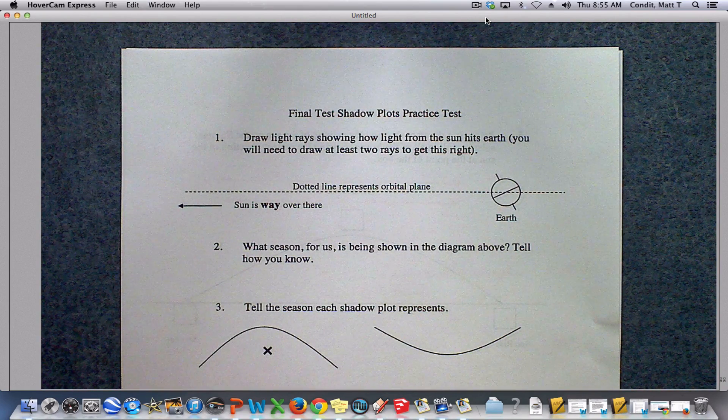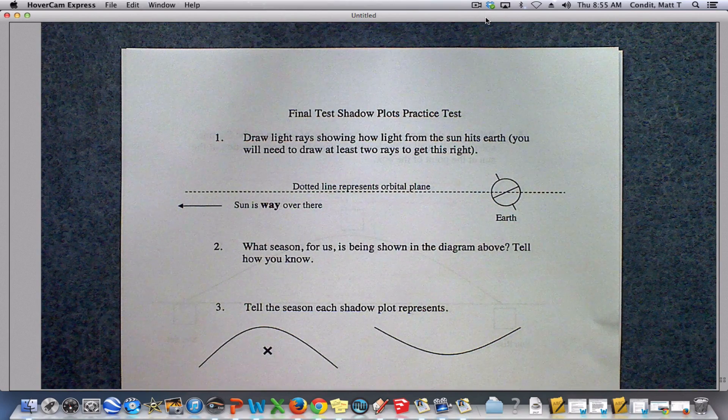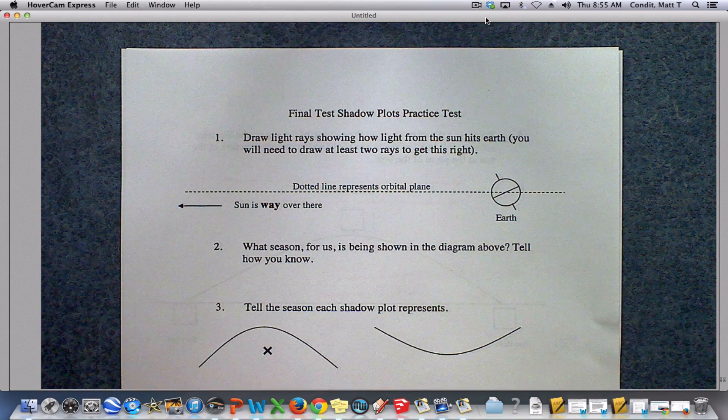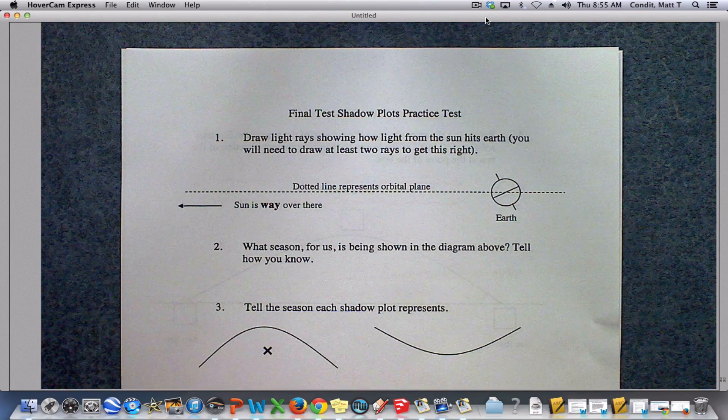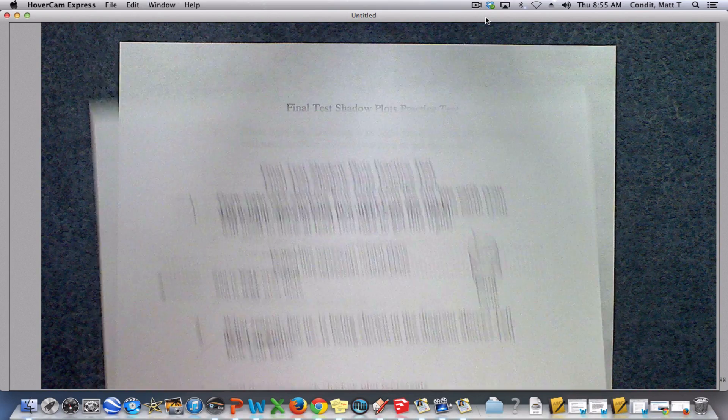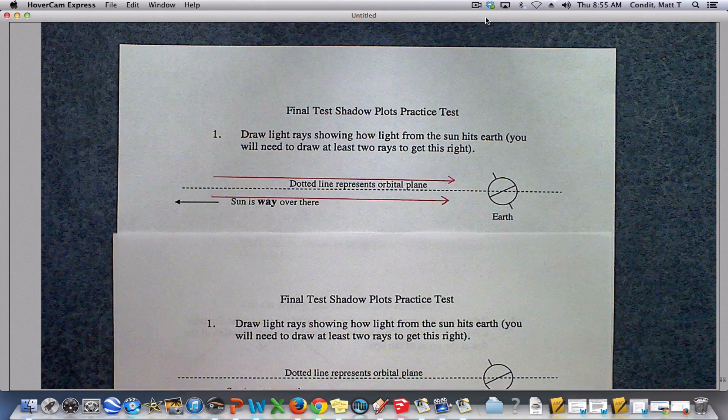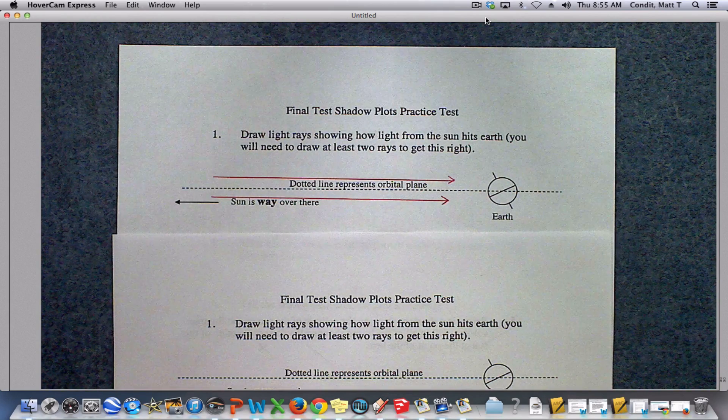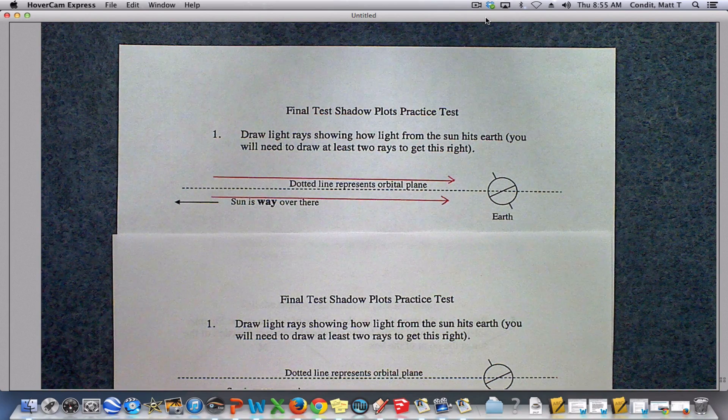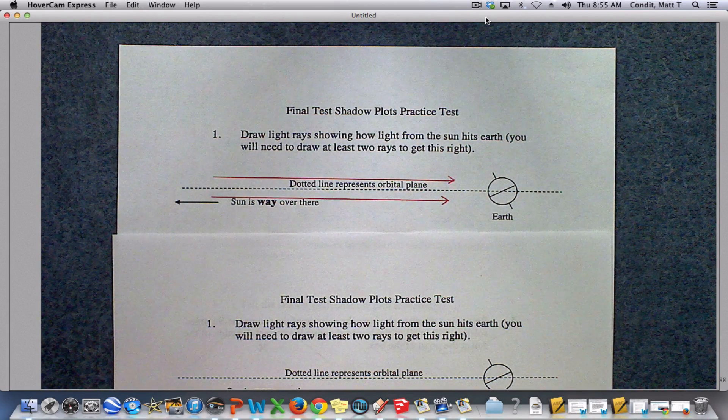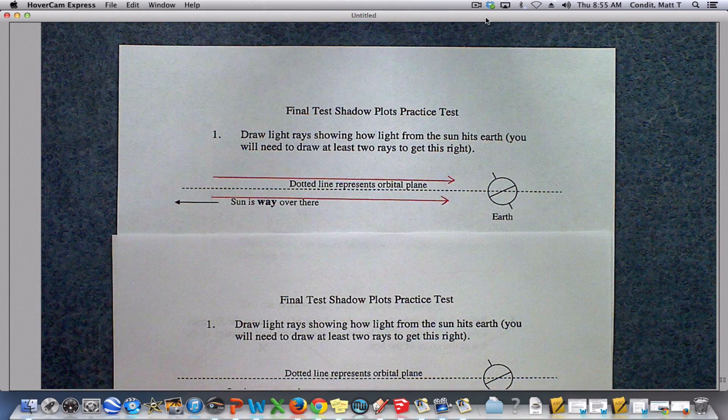Draw light rays showing how light from the sun hits the earth. And it says you need to draw at least two lines to get this right. And basically what we want to draw is those lines right there. We want to have straight parallel lines that are lined up with the orbital plane and coming from the direction of the sun right here. So you can see the arrows showing the direction.